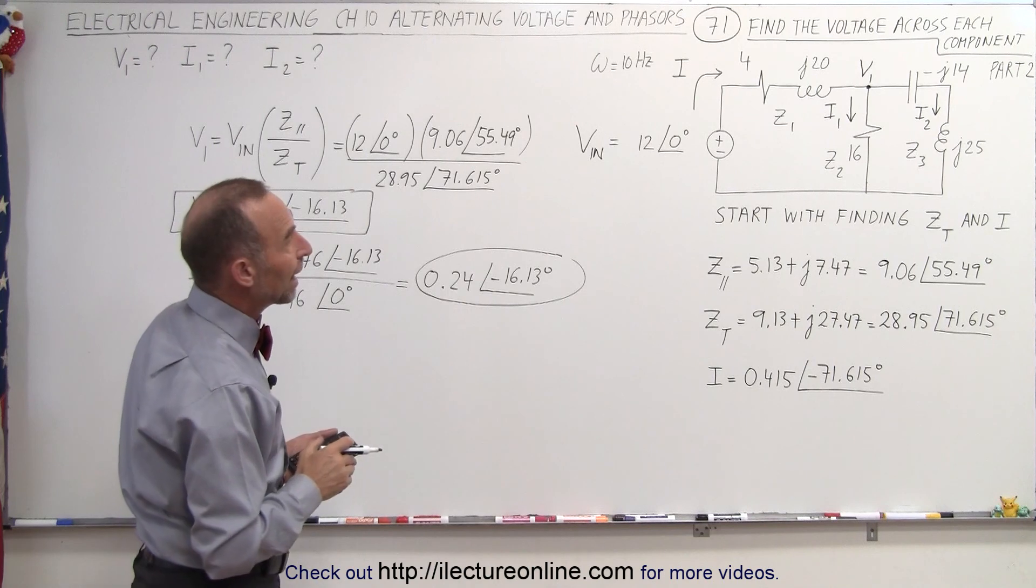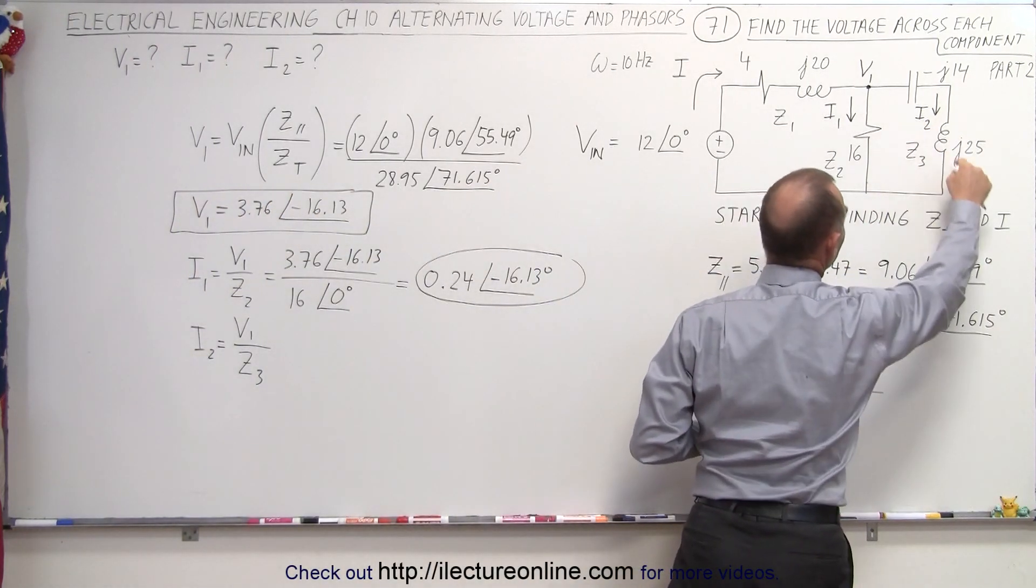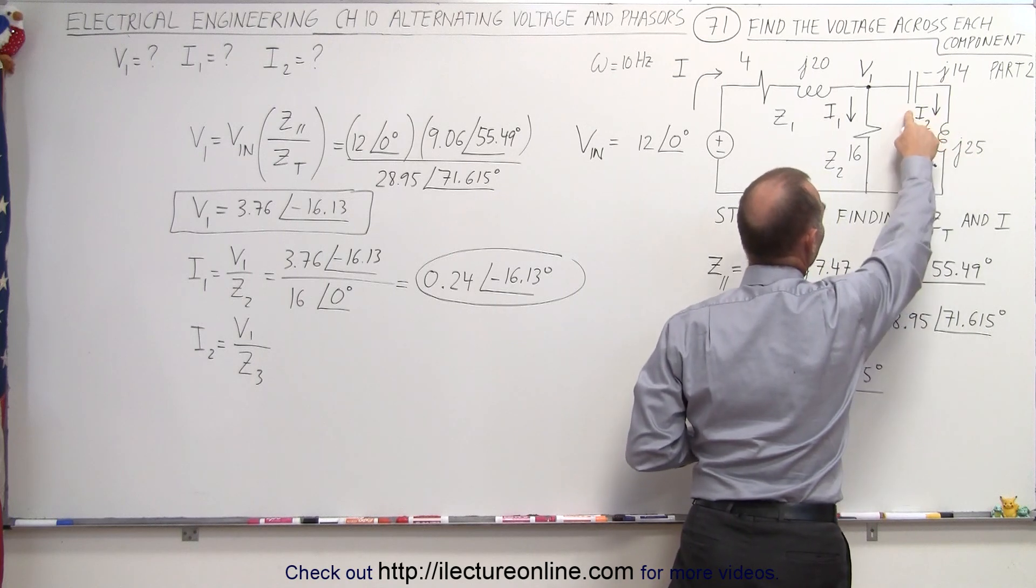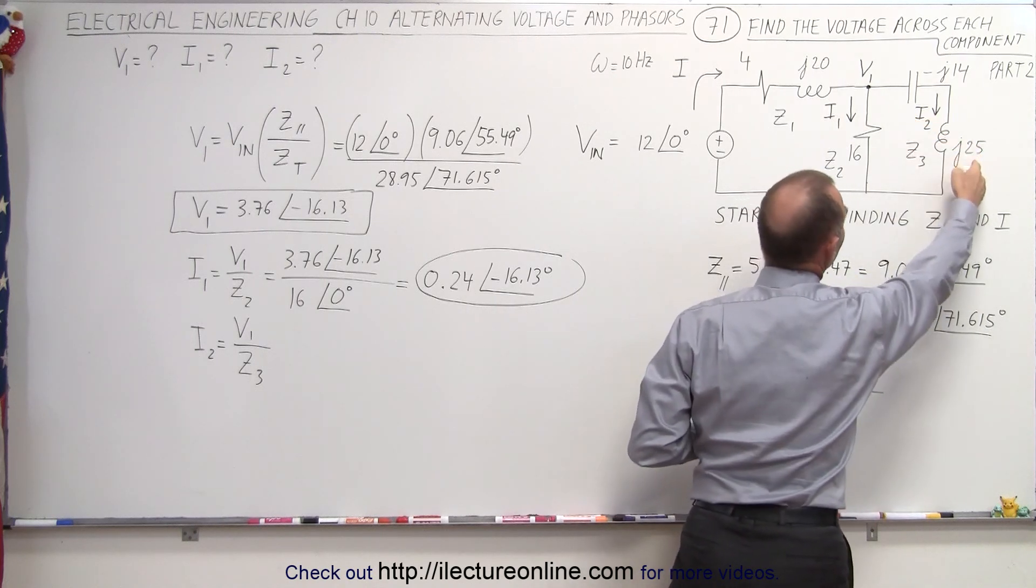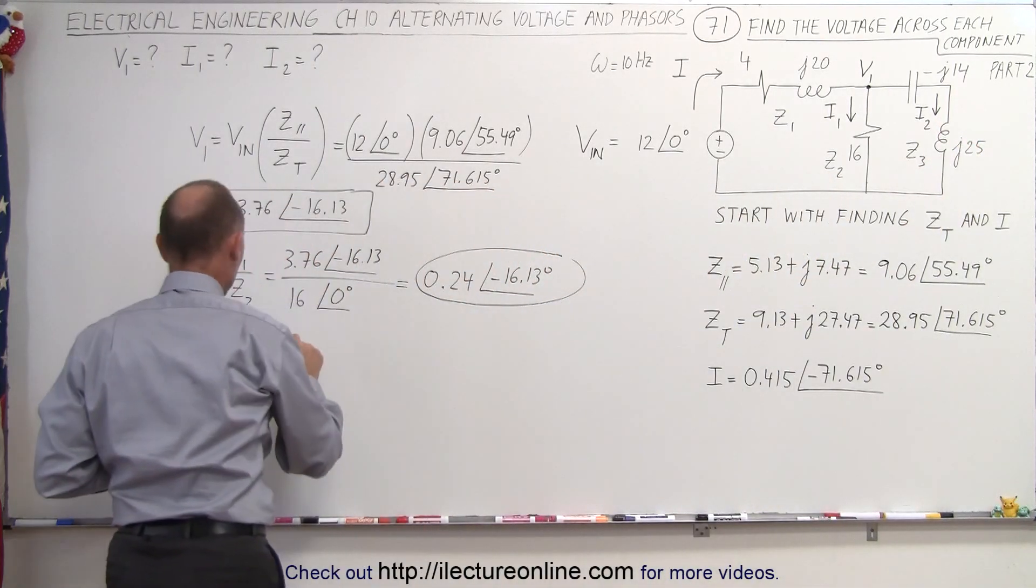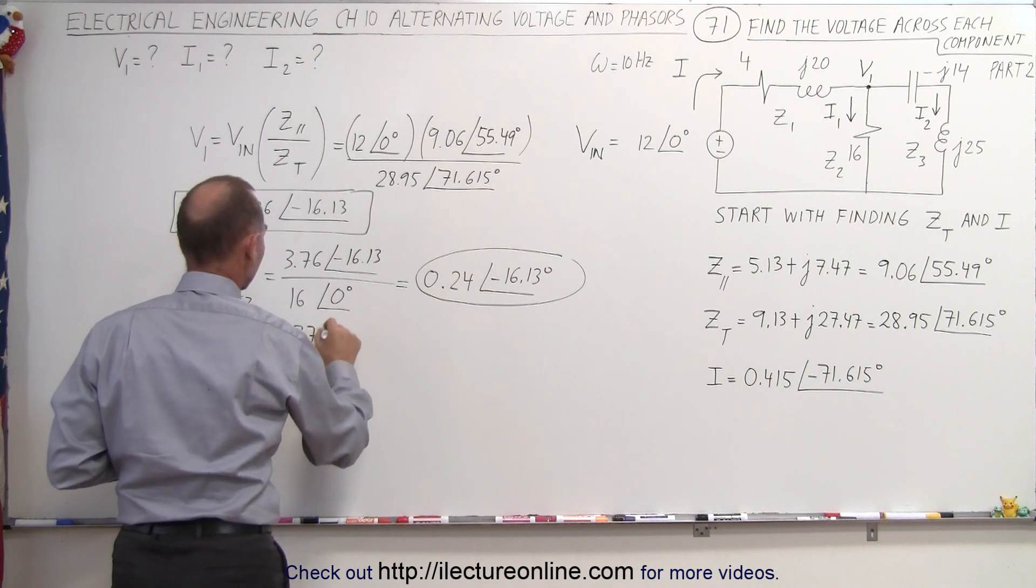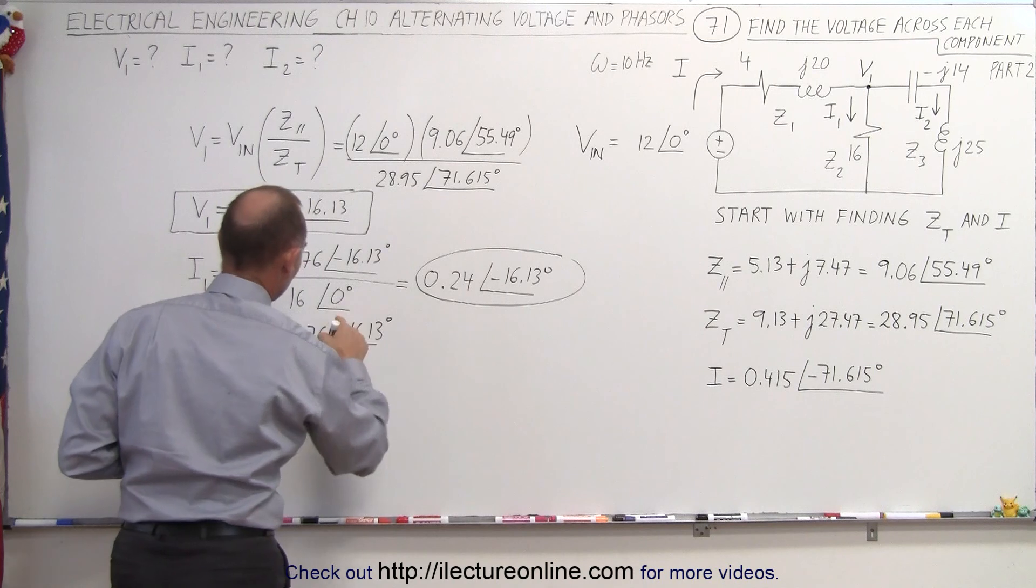Now notice that we have a combination here of a capacitor and an inductor. So this is lagging by 90 degrees. This is leading by 90 degrees. So we have 25 minus 14. That would give us a positive 11. So this would be equal to 3.76 with a phase angle of minus 16.13 degrees. That's the voltage at the branch point